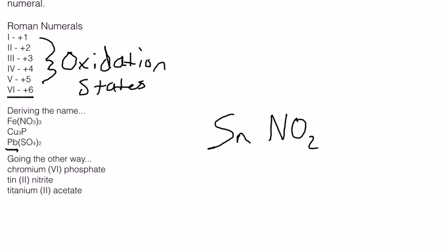But notice tin is oxidizing at a 2 plus state right now. That's what this Roman numeral 2 represents, a 2 plus oxidation state. And so tin being at 2 plus right now, and nitrite being at minus one right now, we obviously need to add in another nitrite.